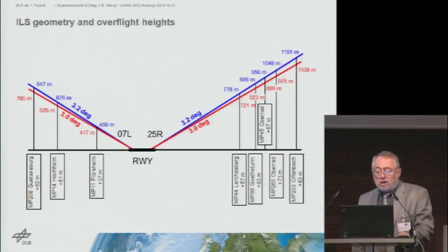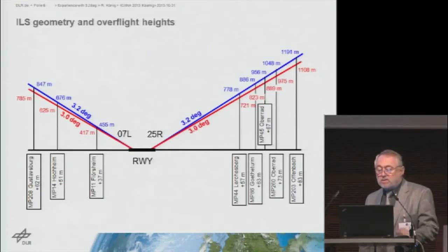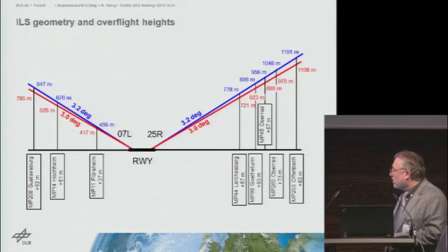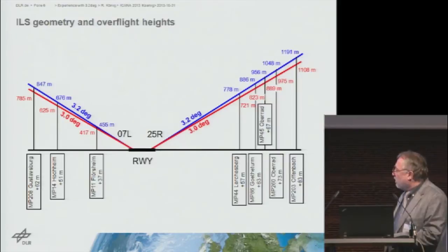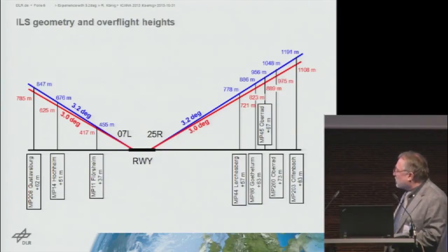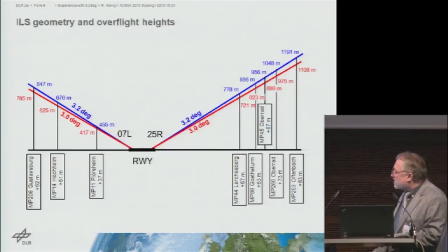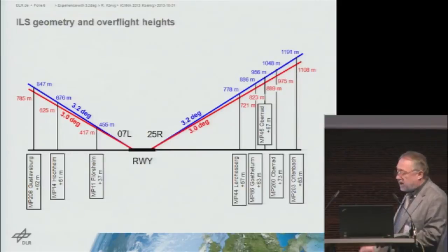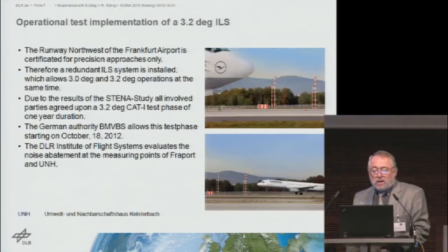Let's look at the geometry for the Frankfurt situation on the new Northwest runway. We used several measurement points for the 07-left approach — three measurement points — and then five for the 25R approach. They're in different areas, and the difference in altitude is between 40 and 60 meters on the left-hand side, and between 60 and 80 meters for the right-hand side.